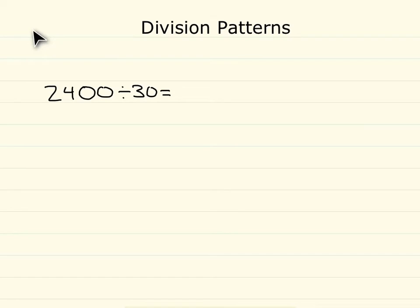Some numbers work really well to divide together. For this example, we have 2400 divided by 30. Because 2400 divided by 30 has basically two division facts, like 24 divided by 3, you can easily do these in your head.